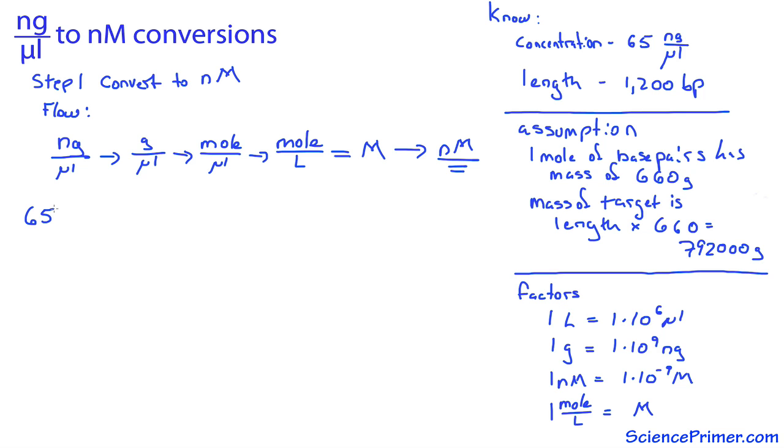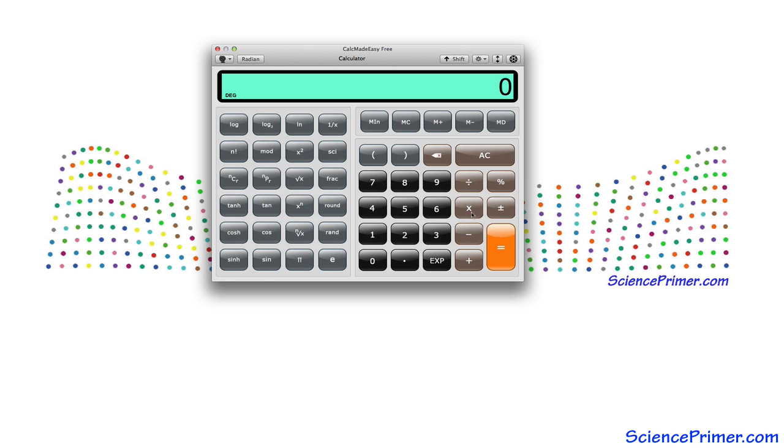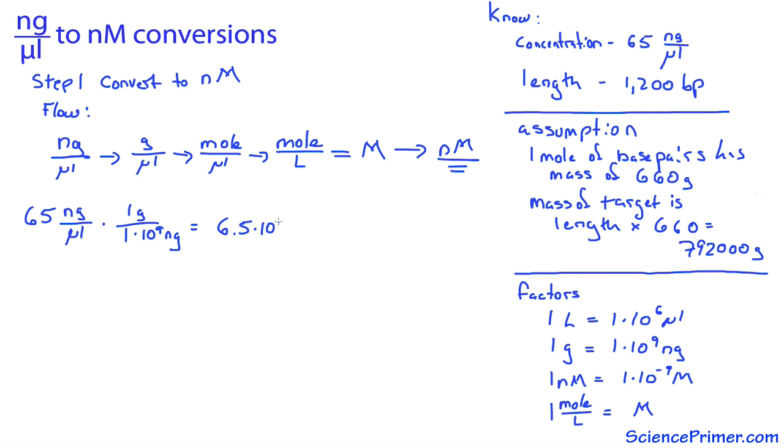Starting with 65 nanograms per microliter, multiply by the grams per nanogram conversion factor. This is 65 times 1 times 10 to the 9. This is a very small number. Writing it in scientific notation gives 6.5 times 10 to the negative 8. Tracking units, the nanograms cancel, and the units become grams per microliter.